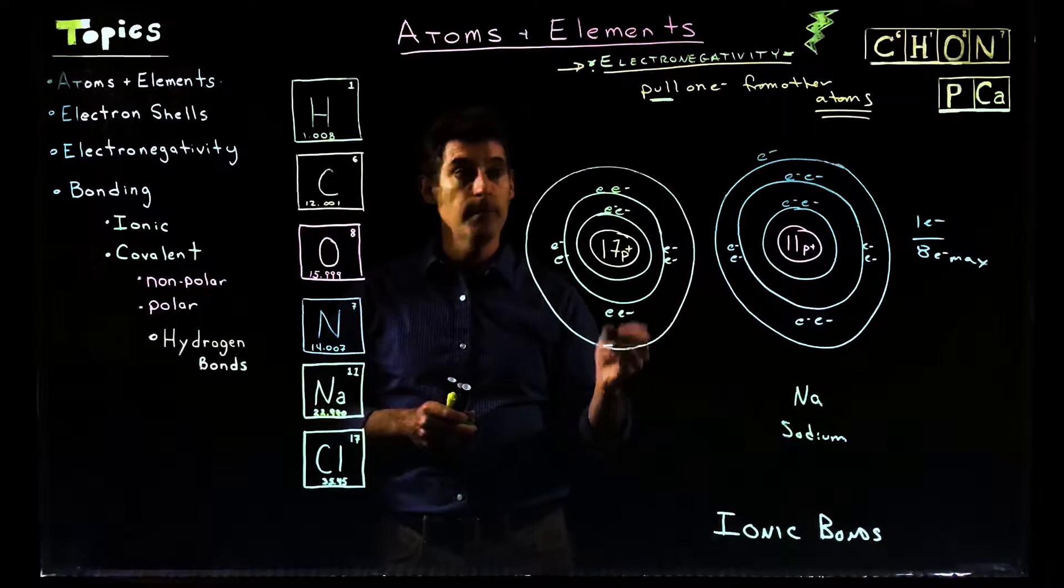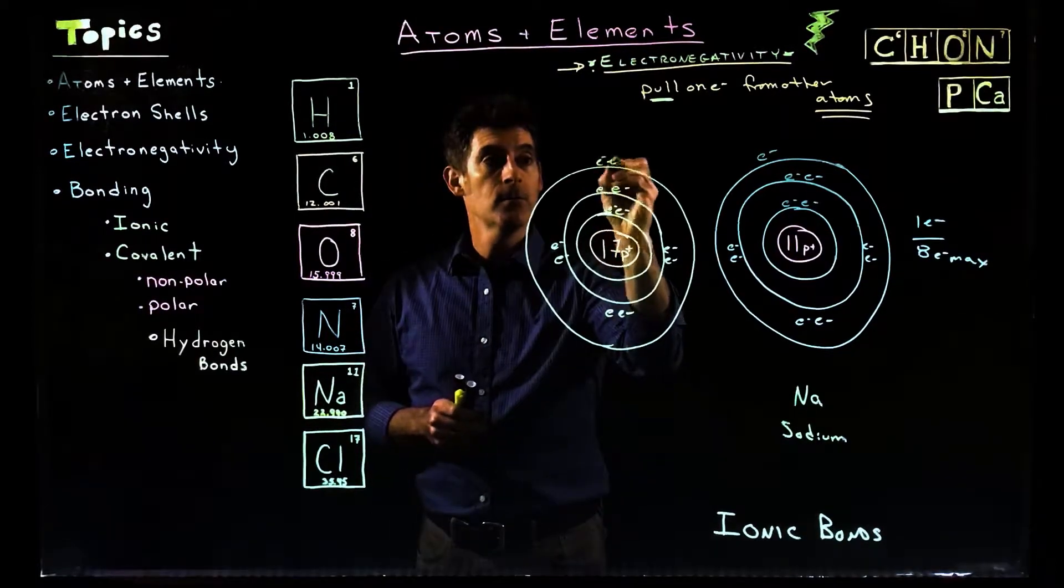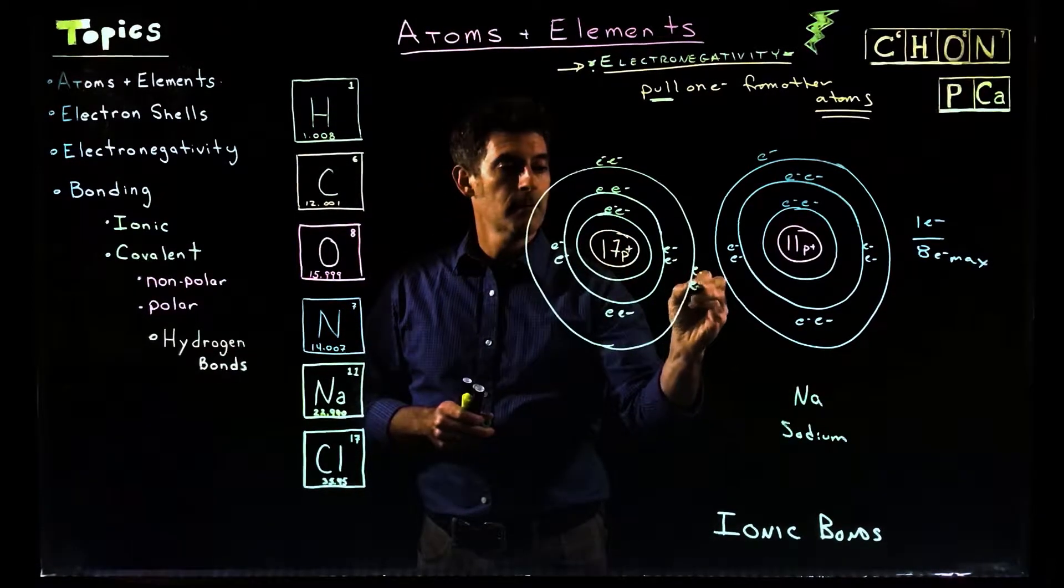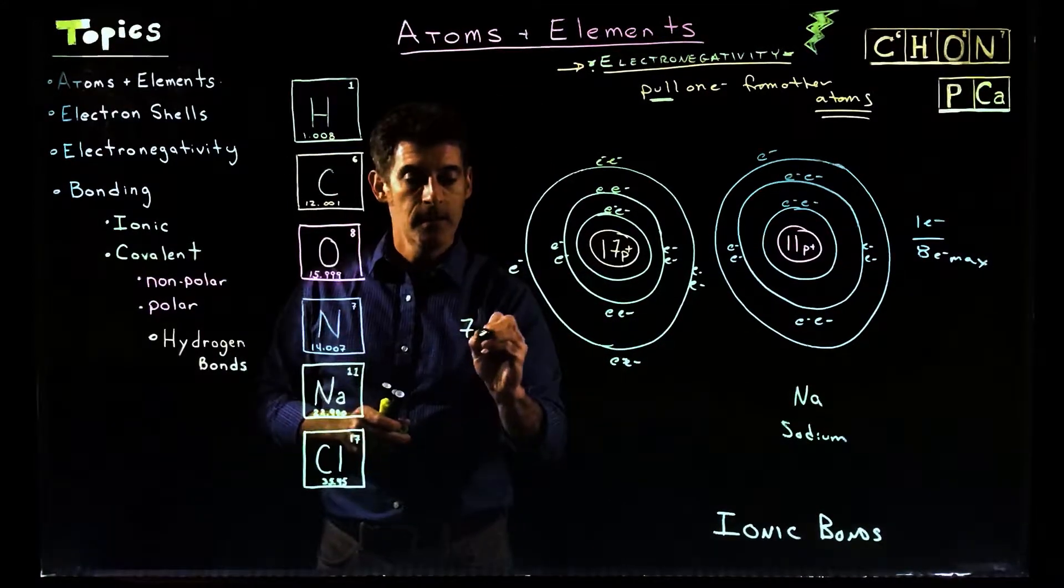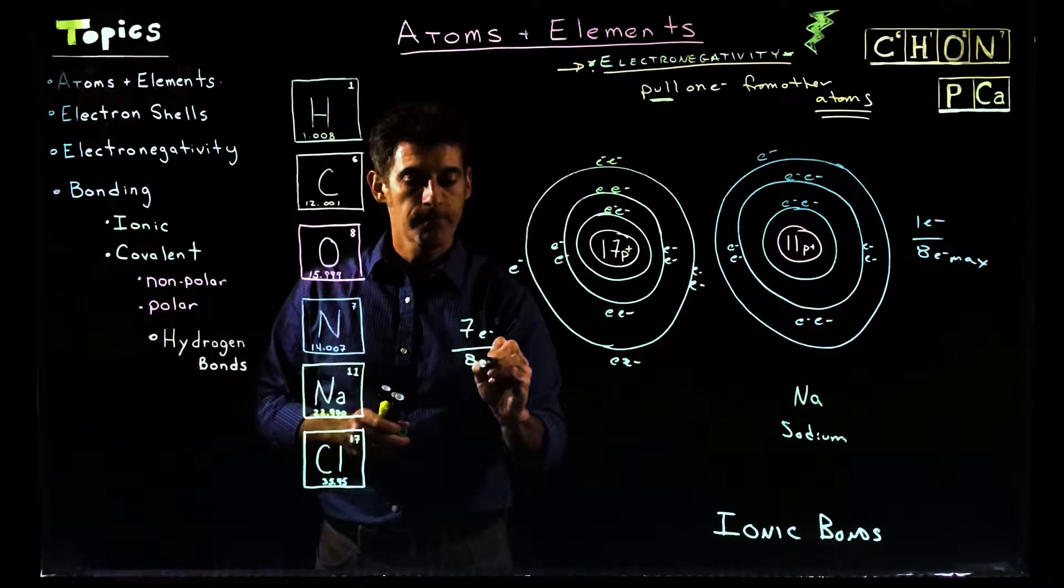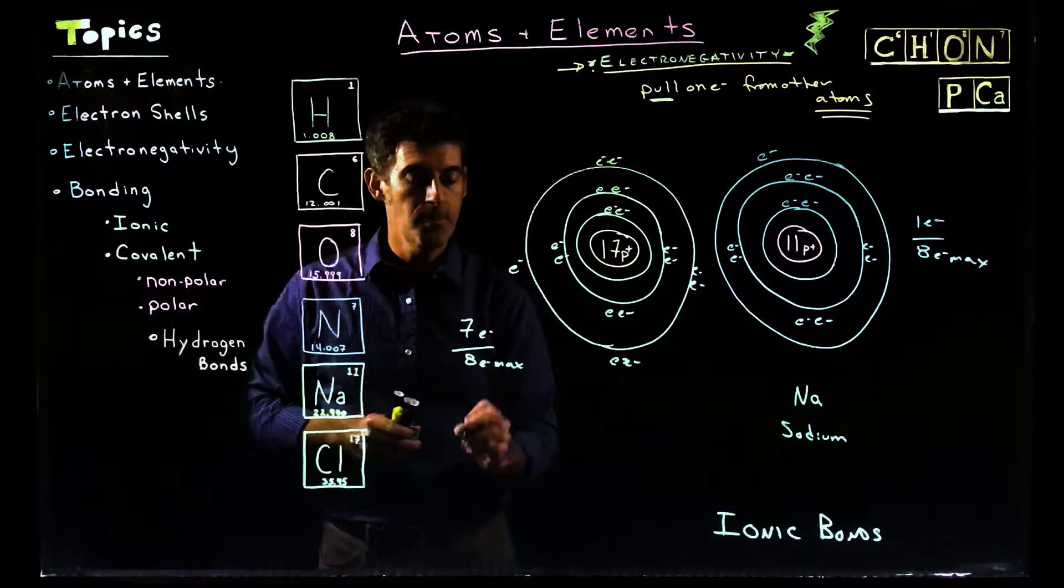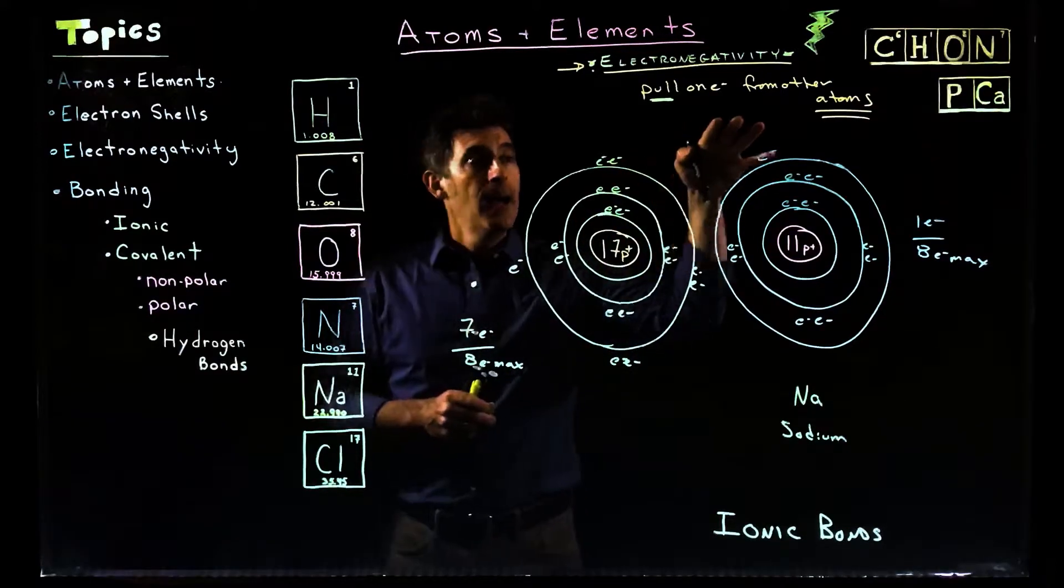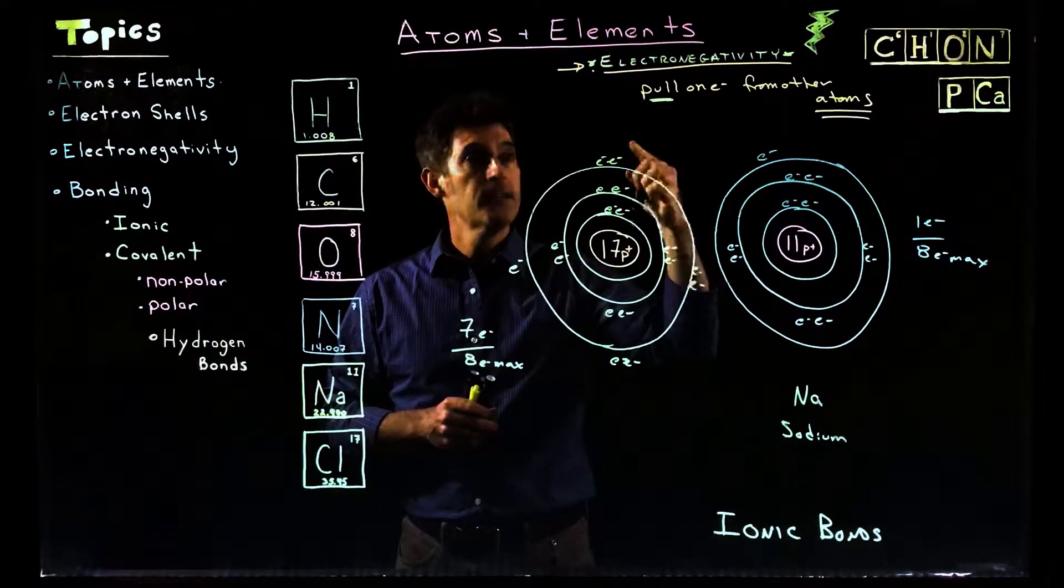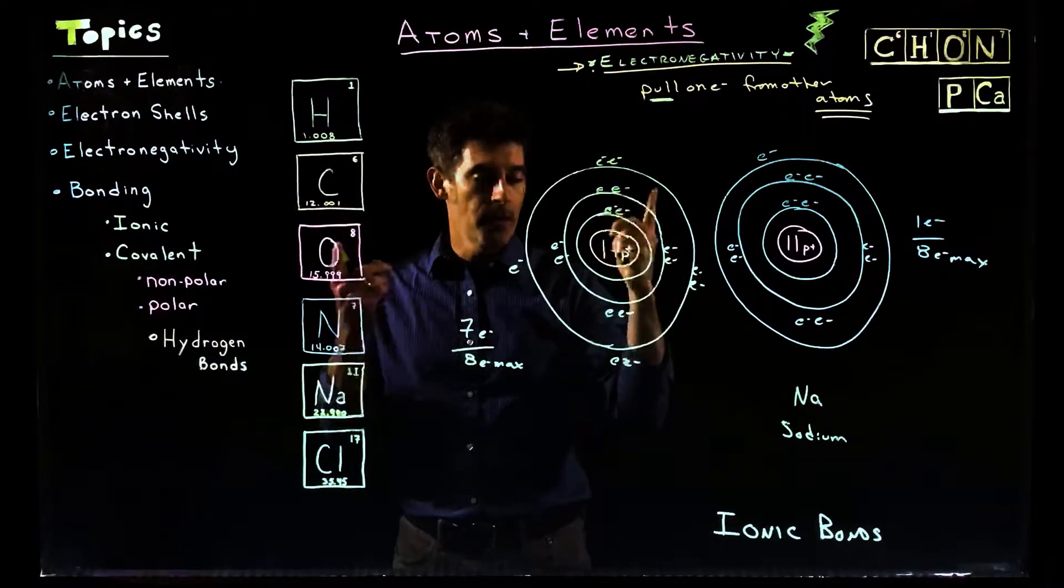But chlorine's story is different. There's 7. 2, 3, 4, 5, 6, 7. It has 7 electrons out of 8 electrons max. So it only needs one more. Remember we said how close they are to being full affects their pull. That's one of the things. That wasn't the only thing, right?